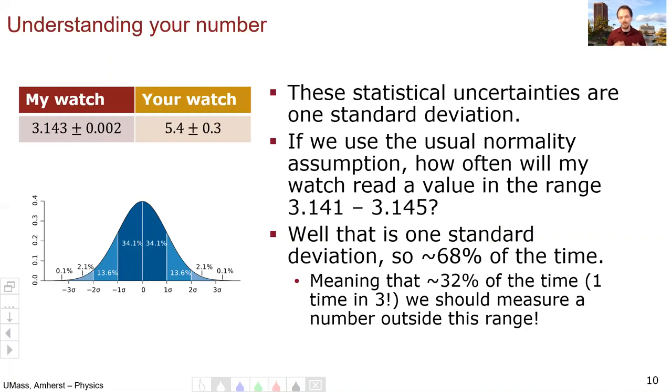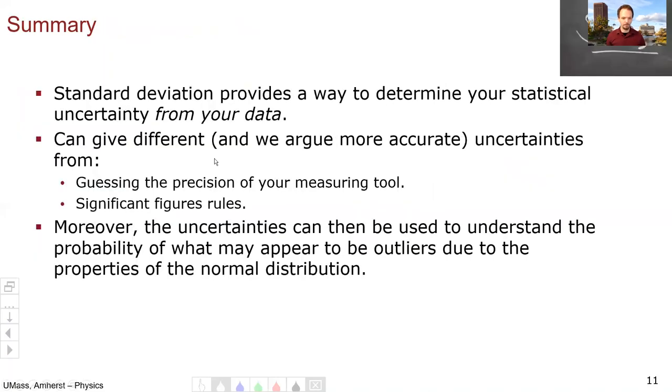So representing your numbers using standard deviations means that you can look at outliers and sort of get a better sense of like, is this actually that weird or should I look into it or is this just normal, right? 32% of the time, my watch should give me a number outside of this range.